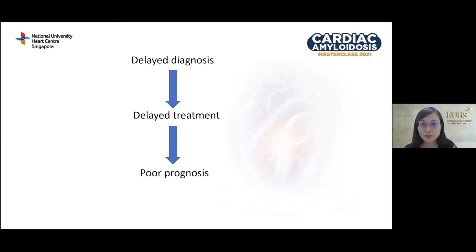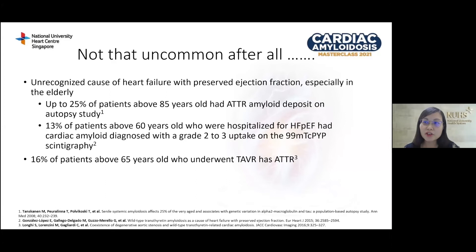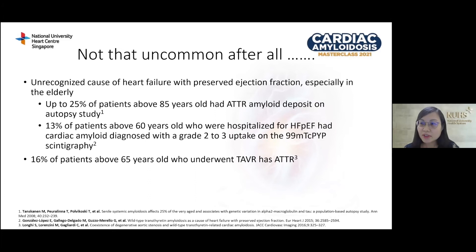Delayed diagnosis leads to delayed treatment and poor prognosis. Cardiac amyloidosis, once thought rare, is not as uncommon as previously believed — it is often an unrecognized cause of heart failure with preserved ejection fraction, especially in the elderly. An autopsy study found that up to 25% of patients above 85 years old had amyloid deposition. A more recent study showed 13% of patients admitted for HFpEF above age 60 had cardiac amyloidosis on technetium pyrophosphate scans. Another study showed 16% of patients above 65 undergoing TAVR for severe aortic stenosis had transthyretin amyloidosis.